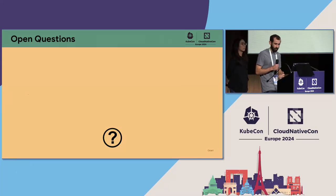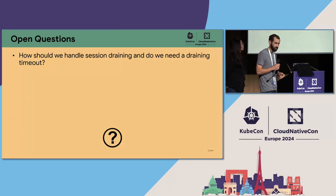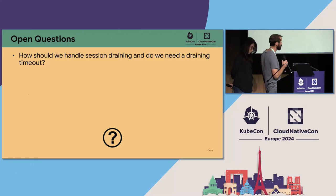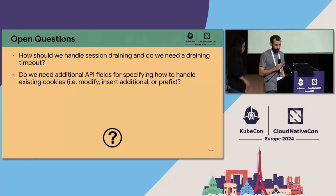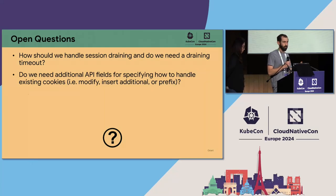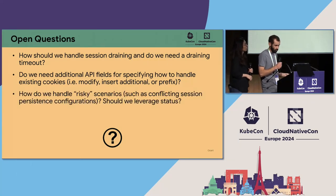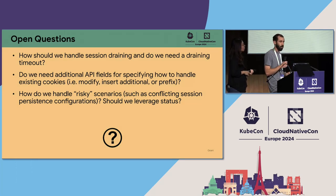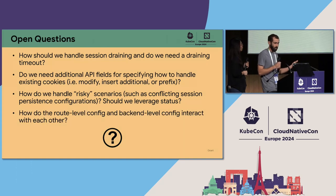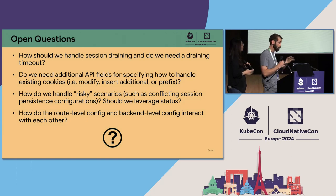We have some open questions still to answer. One is session draining and session draining timeout — an area we still need to explore. Currently, we don't have an API specifying how to handle existing cookies, such as whether a gateway should modify, insert, or prefix a cookie; for now we leave it to implementations. There might also be a risky situation with conflicting session persistence configurations, where a status indicator could be helpful to end users — should we leverage status in these situations? Lastly, we still need to define behavior when route-level and backend-level configuration are both defined at the same time.